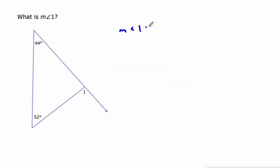The measure of angle 1 is equal to 44 degrees plus 52 degrees which is 96 degrees. That's a lot faster way to look at it, isn't it?